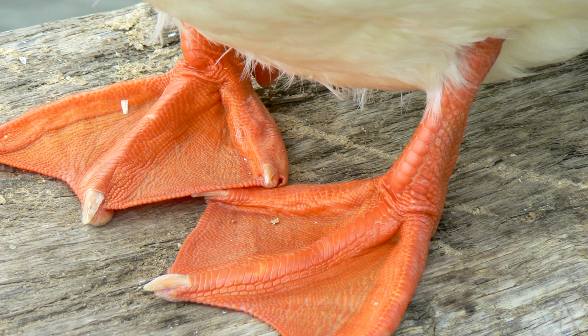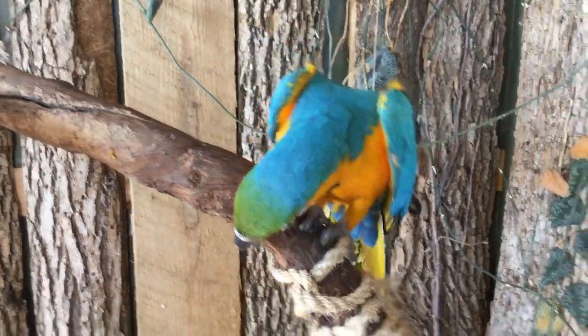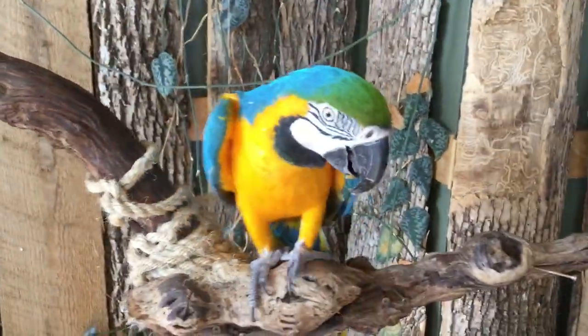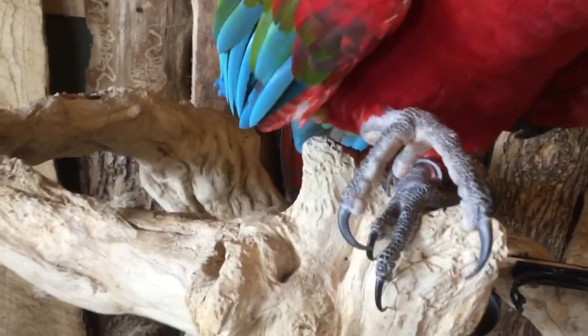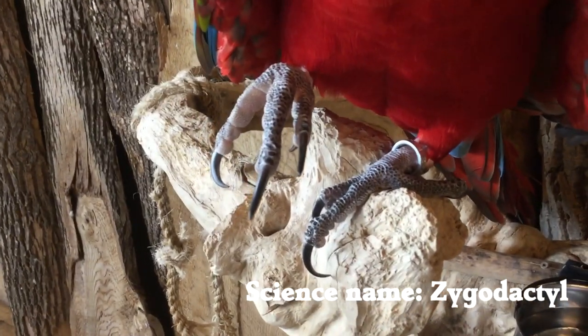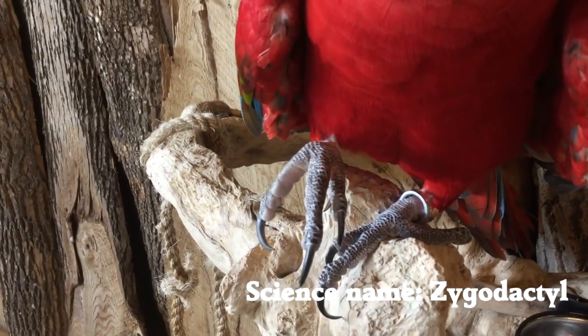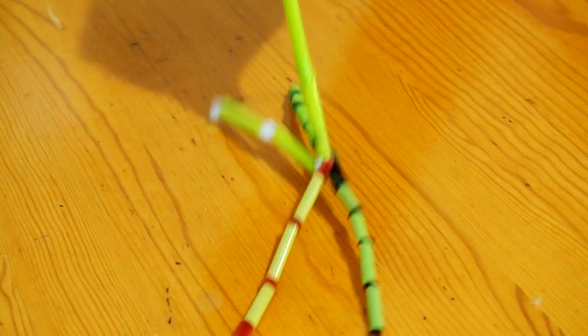Songbirds, eagles, doves, and more. Now let's see what else life has in store for us. Parrot feet are different. It's one of the ways you can identify them. They have toes one and four backwards, and toes two and three forwards.